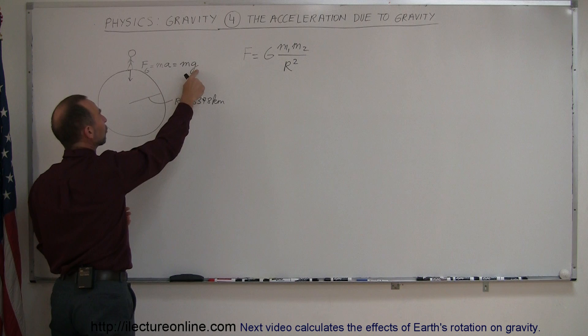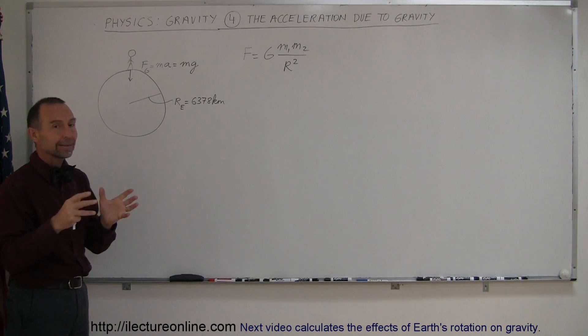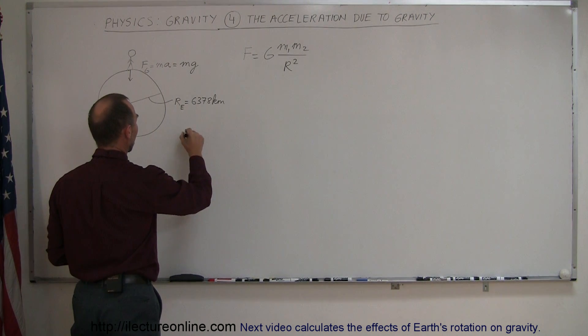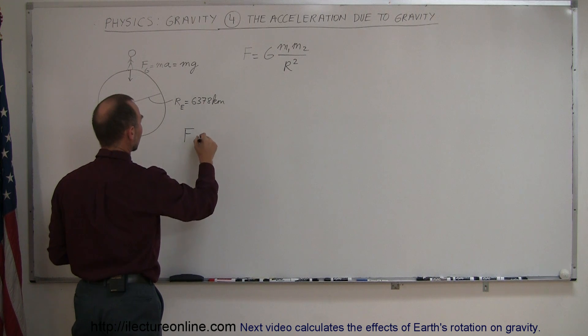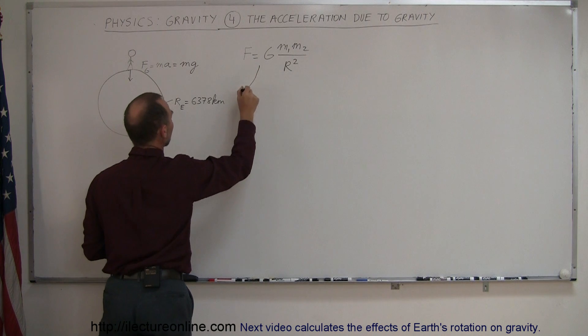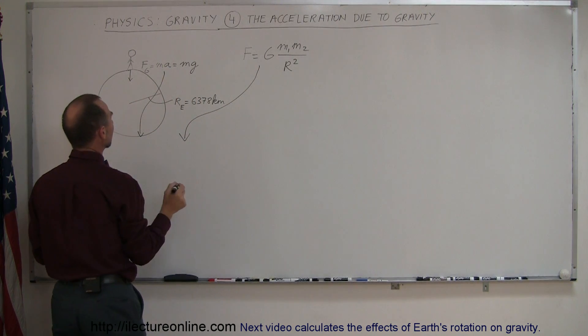Of course, instead of A, we typically use the letter small g which indicates that it's around 9.8 meters per second squared. So if we set those two equations equal to each other, let's take this equation right here and this equation and put it right here and set them equal to each other.